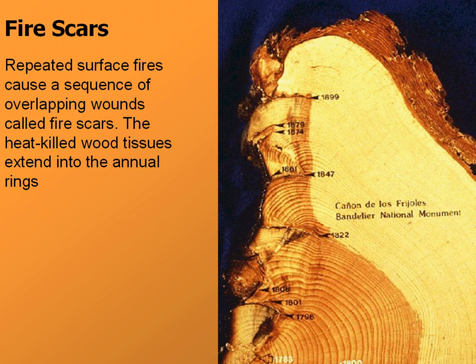These types of surface fires can damage trees if a period of time goes by with repeated surface fires. This particular tree in the photo went through 11 major fires. Certain wood tissues can be burned, which isn't so good for lumber or timber production, but doesn't kill the tree.